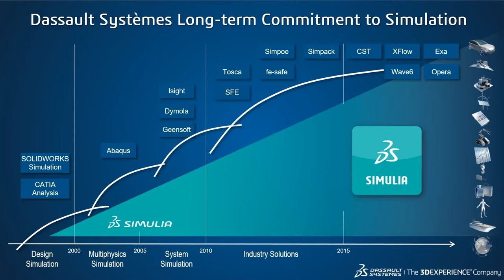This chart shows probably the last 20-plus years of simulation-type acquisitions. You see the desktop simulation tools and the desktop plastic tools embedded inside of SOLIDWORKS. Back in the early 2000s, Dassault acquired Abaqus. Abaqus is arguably the flagship product inside of the Simulia brand and is arguably the most reliable and robust structural finite element analysis solver on the market.